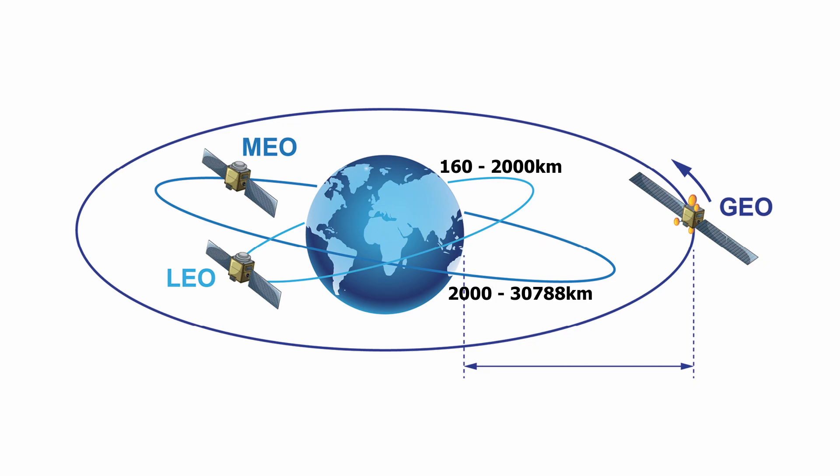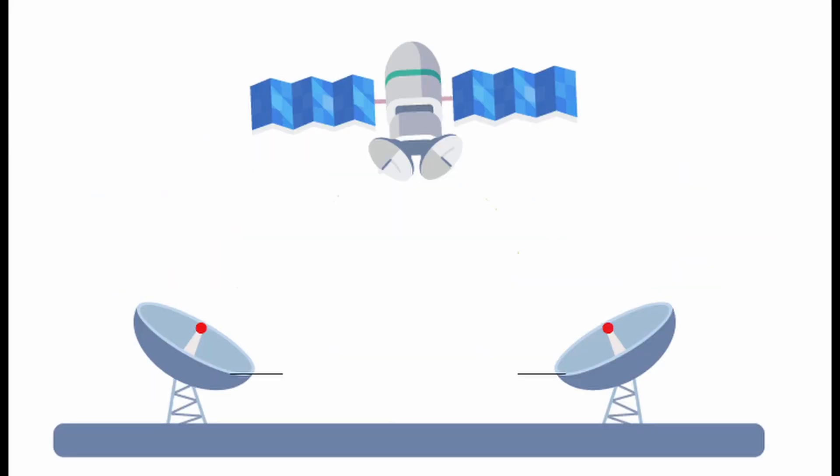GEO satellites have an altitude of 35,786 kilometers above the Earth's surface. The orbital period for a GEO satellite is approximately 24 hours of revolution around the Earth.